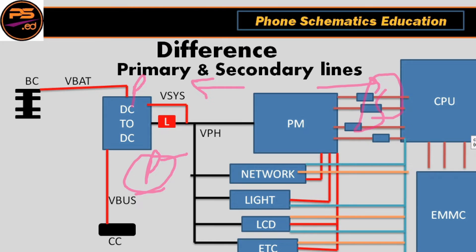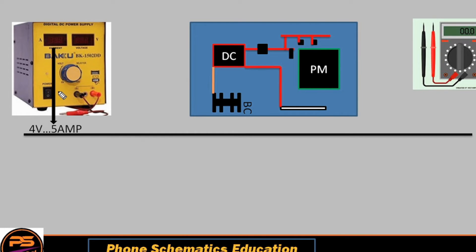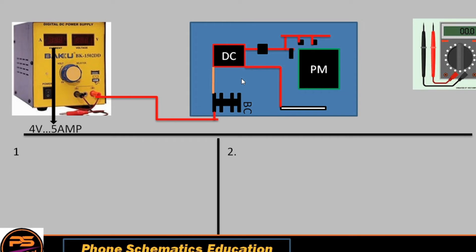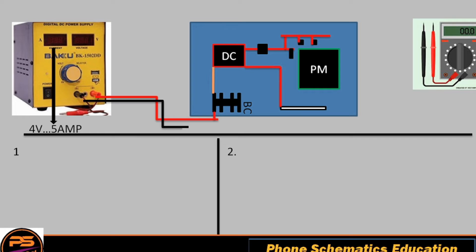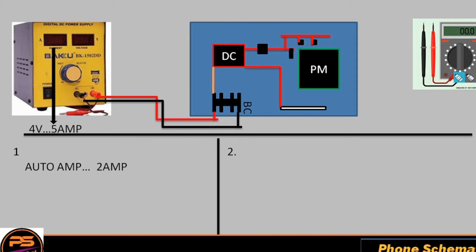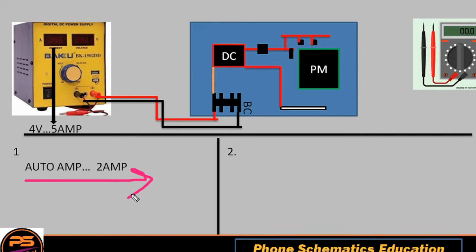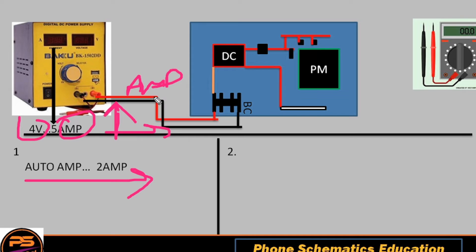There is a DC machine, a motherboard, and a multimeter. Suppose a phone comes to you in a short condition — when you connect the boot cable it takes auto ampere. Auto ampere means: if you set the DC machine to 4 volt, 5 ampere, and when you connect the port cable it automatically consumes ampere without pressing the on/off button. If a phone takes automatic ampere consumption on connection without pressing on/off, the phone is shorted.